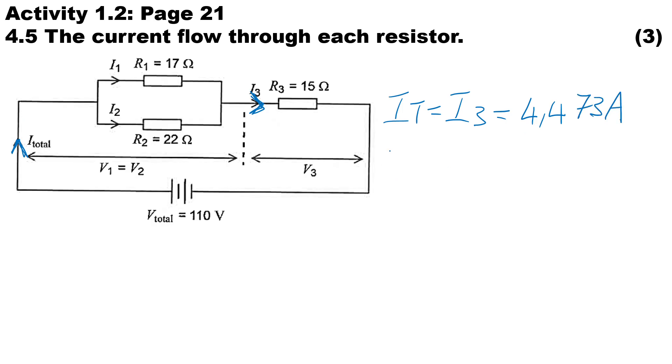Okay, now we can go ahead and calculate I1, and here we will use the voltage across the parallel branch divided by R1, and then to calculate I2, it will be the voltage across the parallel branch divided by R2. So therefore, V parallel...